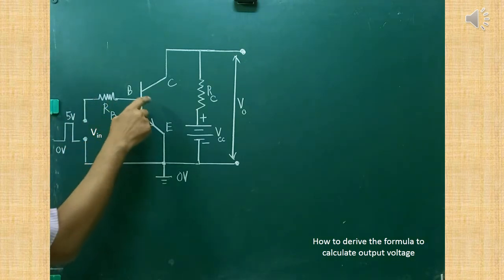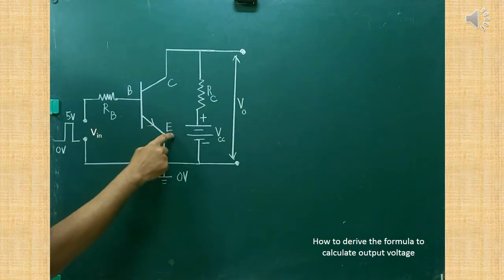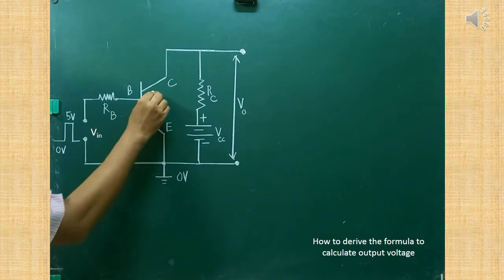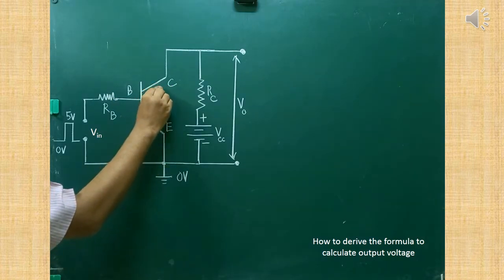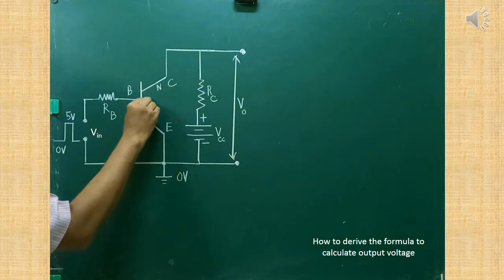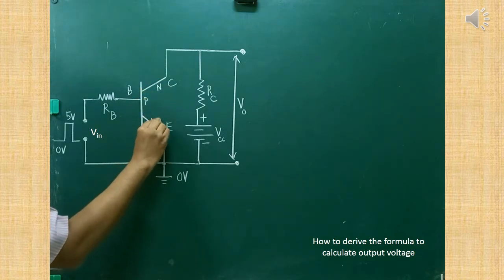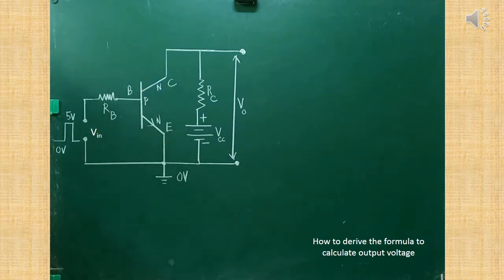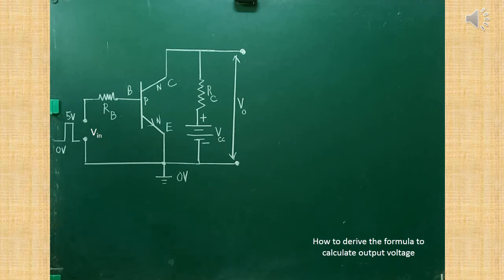You have to understand that this is the base terminal, this is the collector terminal, this is the emitter terminal, and you have to mark the type of transistor also — NPN. An NPN transistor is used. Be thorough with the circuit — later, learning the transistor as a switch will be very easy.